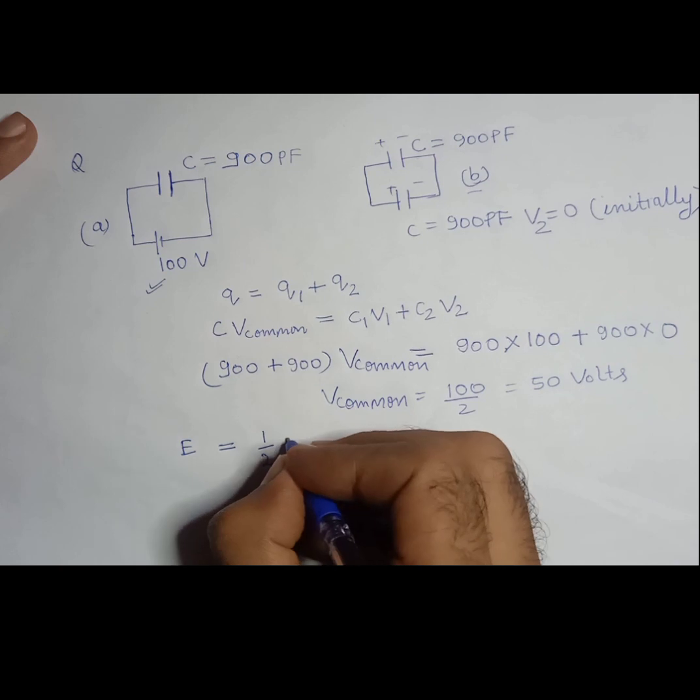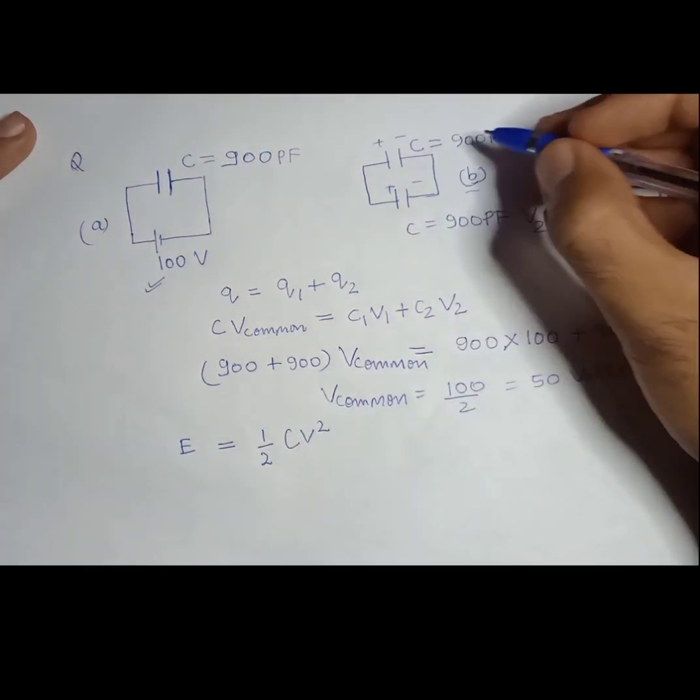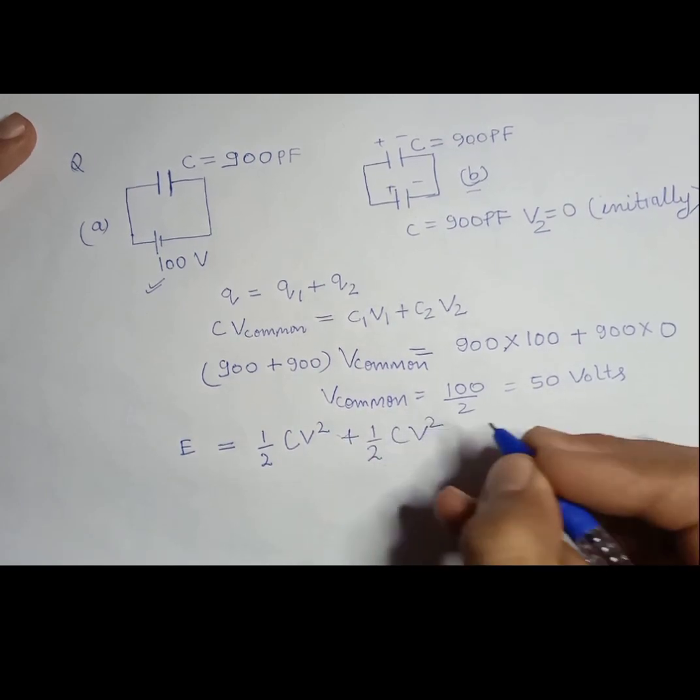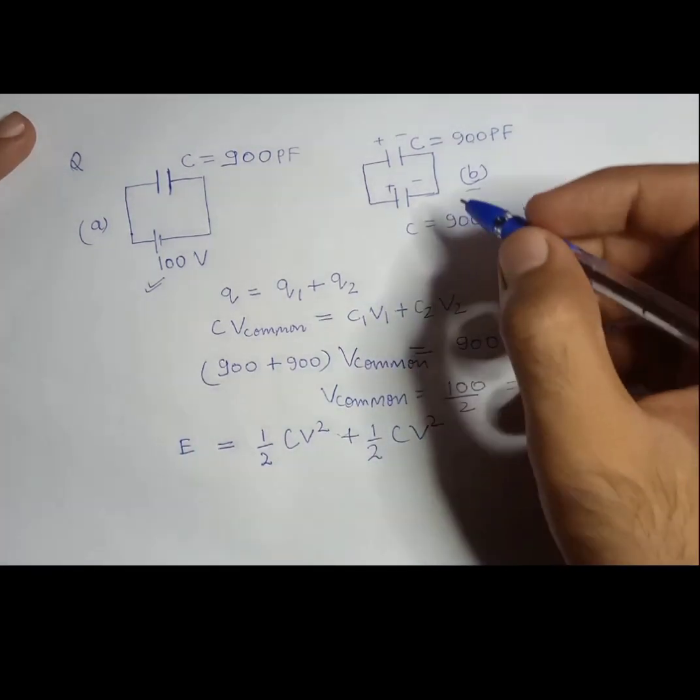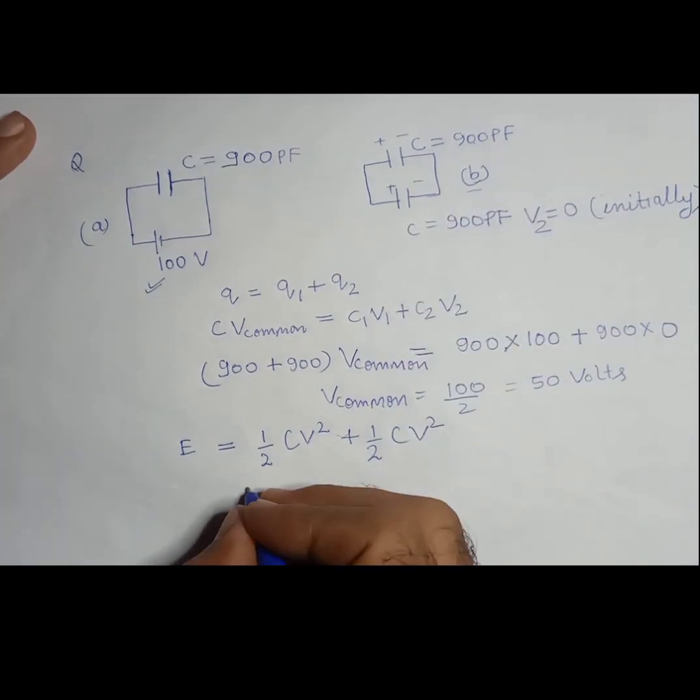So you are asked to find out what would be electrostatic potential energy in system B. So what would that be? Half CV square in this one first capacitor, plus half CV square in the second capacitor.